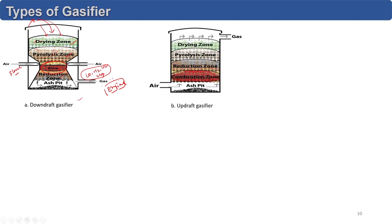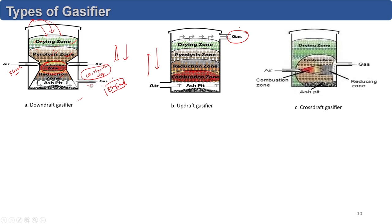In the updraft gasifier, air goes from the bottom — also known as a counter-current gasifier — where air blows up and solid flows down. In the downdraft (co-current), air and solid flow in the same direction, fuel is fed from the top, combustion takes place, and gas is collected from the bottom. Gas from the updraft gasifier is normally used for thermal applications. In the crossdraft gasifier, air is supplied from one side, fuel is fed from the top, gas is collected from the other side, and the flame is generated at the center.